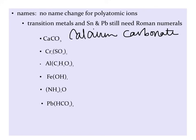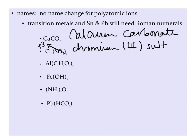In the next example, you see the parentheses. So the only thing inside the parentheses is a polyatomic ion, so that's a good clue. Our first element is chromium. Chromium is a transition metal with more than one possible charge, so we are going to want to indicate the charge using a Roman numeral. And that charge is plus three. And then our polyatomic ion is called sulfate.